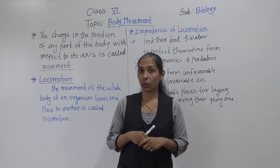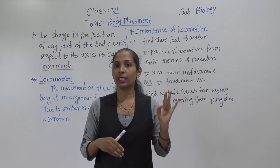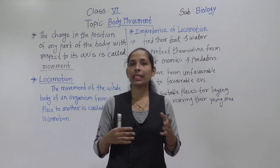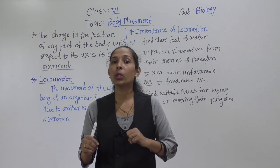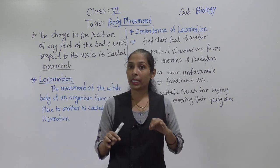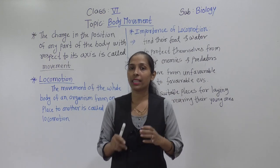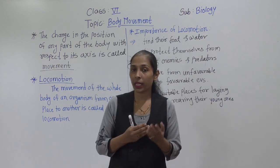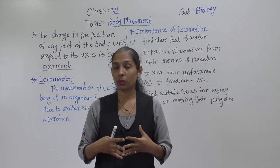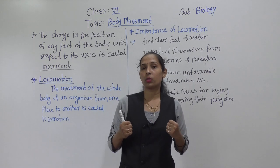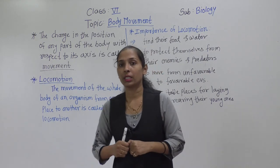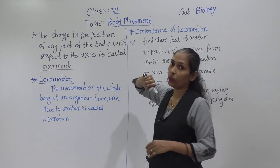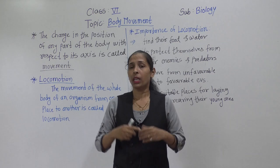As we know, there are three living things present on the earth: human beings, animals, and plants. Human beings and animals can easily move from one place to another, but plants also show certain types of movement. We will discuss which body parts and organs help us do the movement in this lesson.